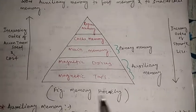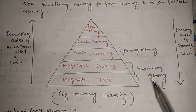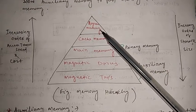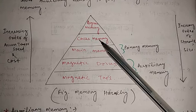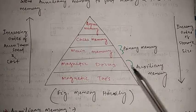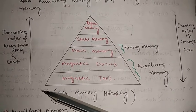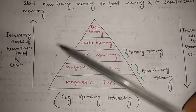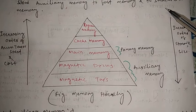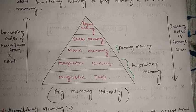Look at this diagram properly. This is the pyramid structure of your memory organization. The register memory is nearest to the CPU, then after register memory comes cache memory, then main memory — also called primary memory — then magnetic disks and magnetic tape, which are also called auxiliary memory. When we go from bottom to top, the speed and cost of memory increase. When we move from top to bottom, the storage size increases.